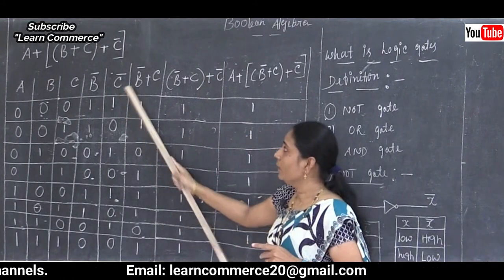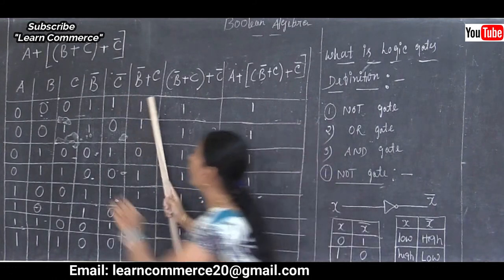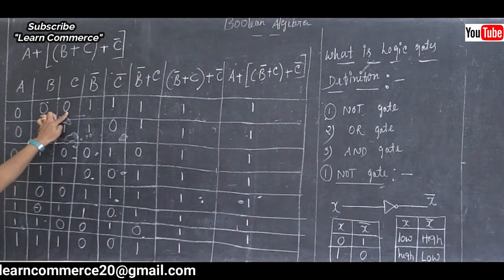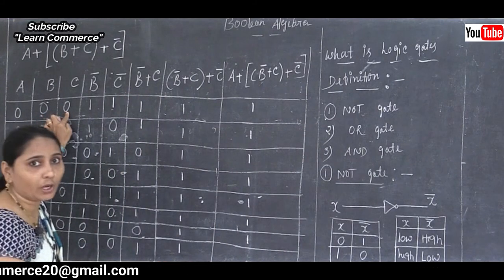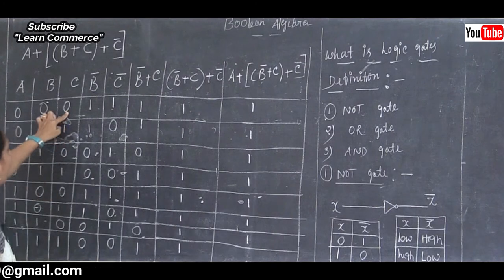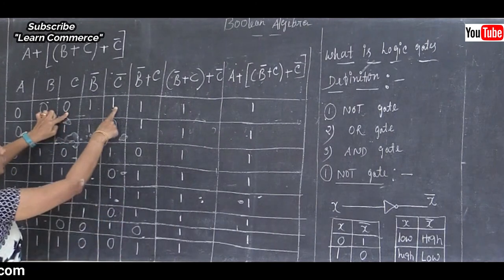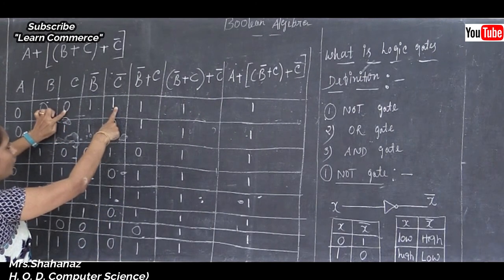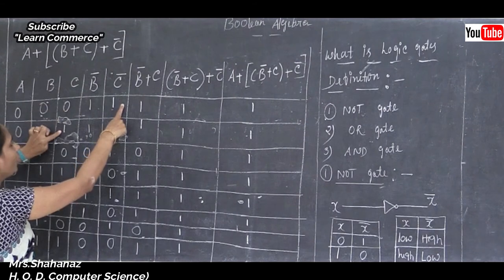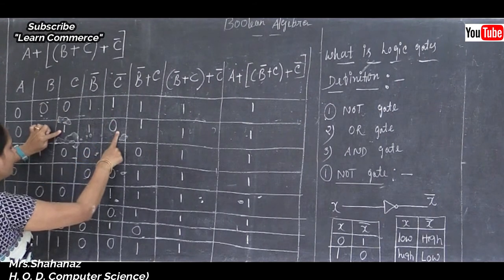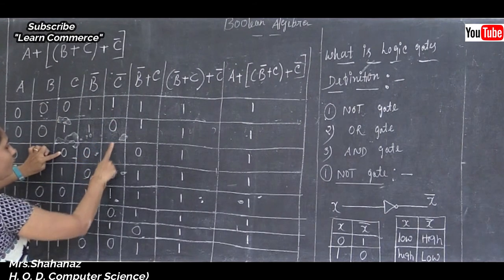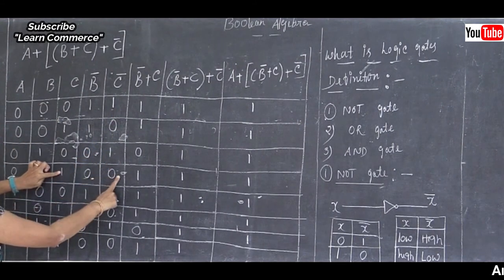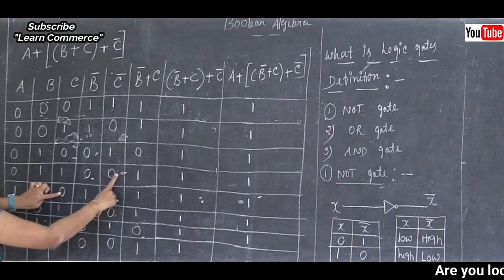For complement C, we take the third column C and apply complementation. The C column values are 0, 1, 0, 1, 0, 1, 0, 1. After complementation, they become their opposites.